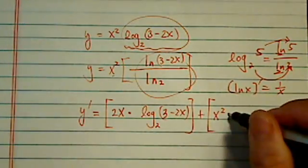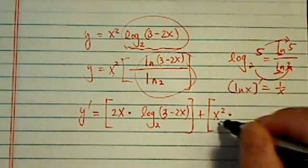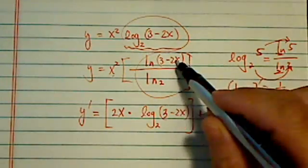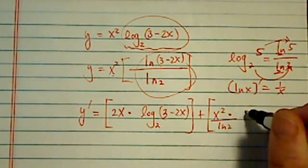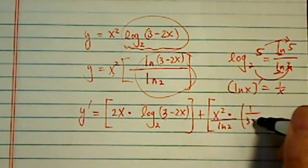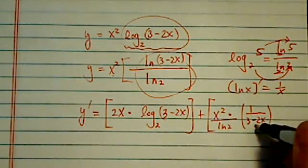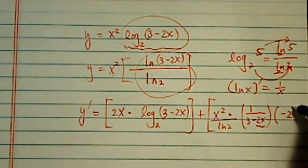Now, I'm going to use this term times derivative for the second one. Now, this one doesn't change, it's just the coefficient. Derivative of the natural log on top is 1 over 3 minus 2x, and then you have to use chain rule one more time because minus 2x derivative is minus 2.